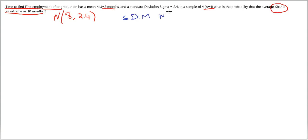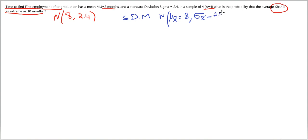The sampling distribution of the mean will have μ_X̄ equal to the original μ, which is 8. It will also have a standard error σ_X̄ equal to 2.4 divided by the square root of 4. Since √4=2, that gives us 2.4 divided by 2, which equals 1.2. This is for n=4.